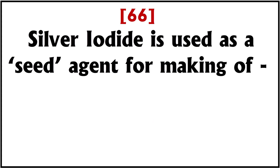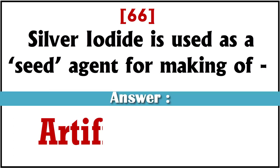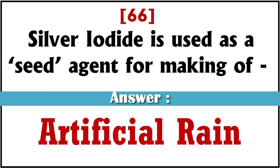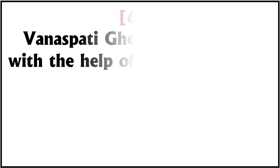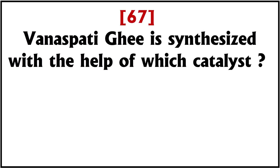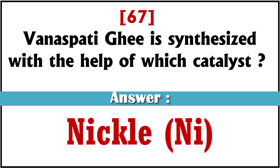Silver iodide is used as a seed agent for making of? Answer: artificial rain. Vanaspati ghee is synthesized with the help of which catalyst? Answer: nickel.